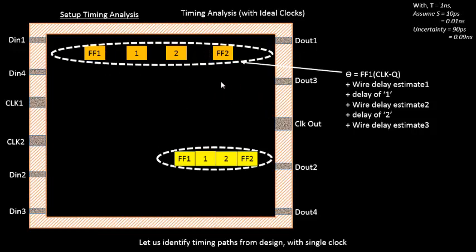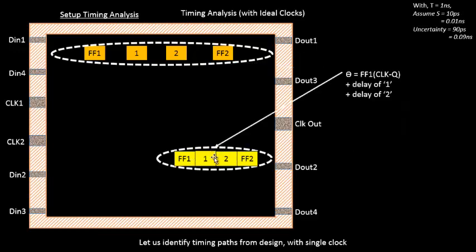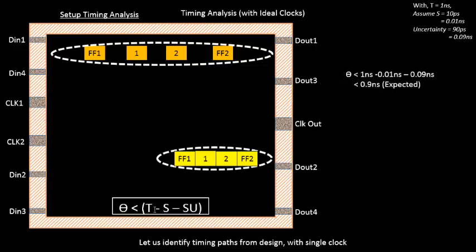The combinational delay is calculated as: flip-flop 1 clock-to-Q delay, plus the estimated wire delay, plus the cell delay, plus the estimated wire delay between cells 1 and 2, plus the delay of cell 2, plus the estimated wire delay between cell 2 and flip-flop 2. For a section with abutment, the combinational delay is the clock-to-Q delay of flip-flop 1, plus delays of cells 1 and 2, with negligible wire RC. This combinational delay must meet the setup timing criteria.